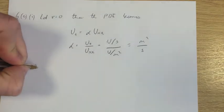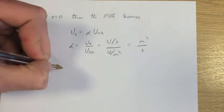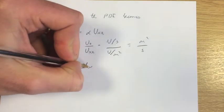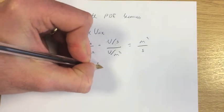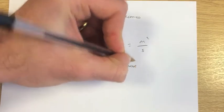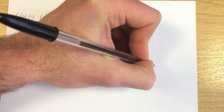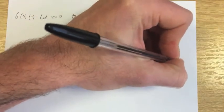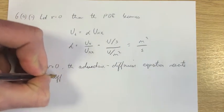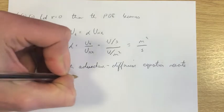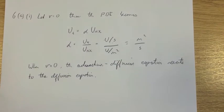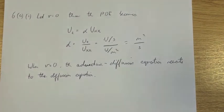So when the velocity is equal to 0, the advection-diffusion equation reverts to the diffusion equation, and that just models pure diffusion. Now on to the second part of the question.